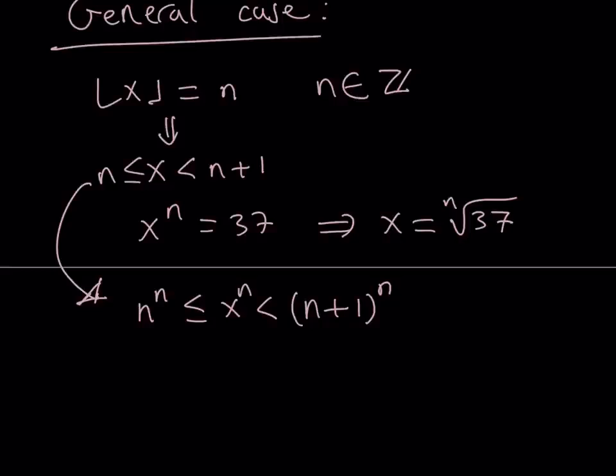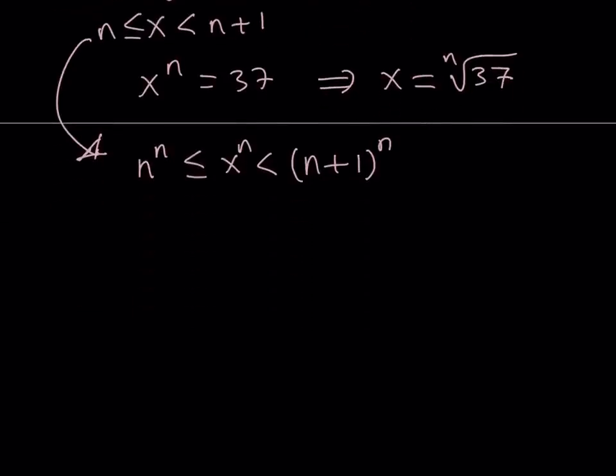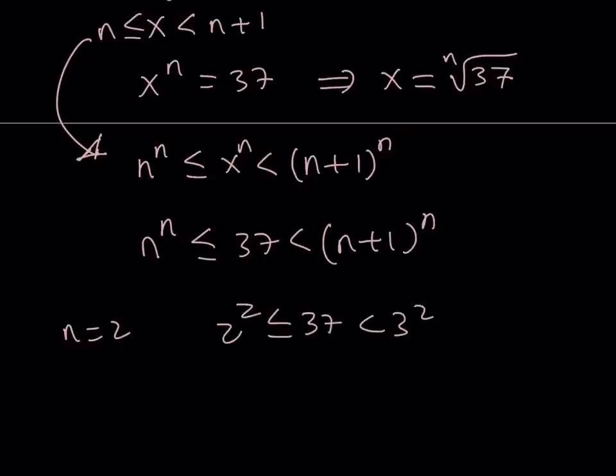This is my inequality or chain of inequalities. Let's go ahead and replace x to the nth with 37. So, I want my number 37 in the middle such that whatever the n is, because n is an integer, my 37 needs to be in this interval. So, for example, if n is equal to 2, then I get 2 to the 2nd and 3 to the 2nd. Obviously, 37 is not between 4 and 9, so this is not valid. Make sense?